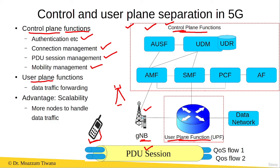In the user plane, we have the user plane function, which is responsible for data traffic forwarding. For example, in a PDU session we have two quality of service flows. The data coming from the data network is forwarded on these two quality of service flows by the user plane function, and then this data goes to the user equipment.